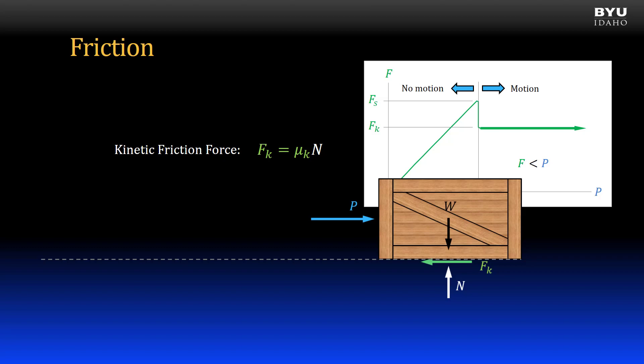You have likely observed this when sliding heavy objects. It takes a larger force to get the object in motion than it does to keep it in motion once you have it sliding. That is because the kinetic friction force is usually less than the maximum or static friction force. The kinetic friction force can be determined using the equation shown, where mu sub k is the coefficient of kinetic friction and N is still the same normal force.